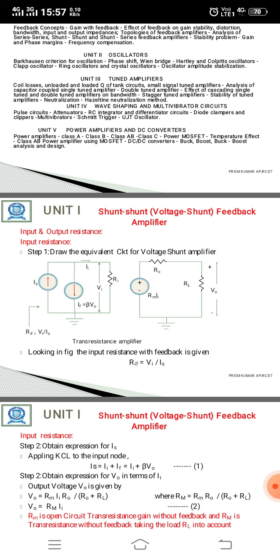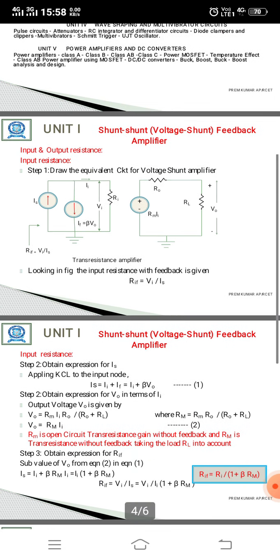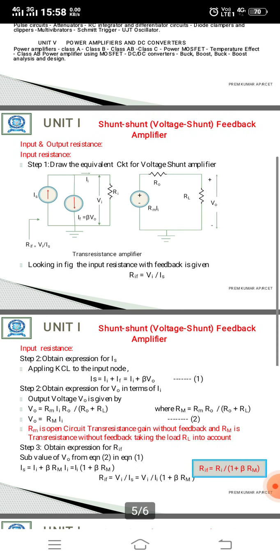Step 2: Obtain expression for is. Applying Kirchhoff's current law at the input node, we get: is equal to ia plus if, equal to ia plus beta times V_naught. Here, if is equal to beta times V_naught.